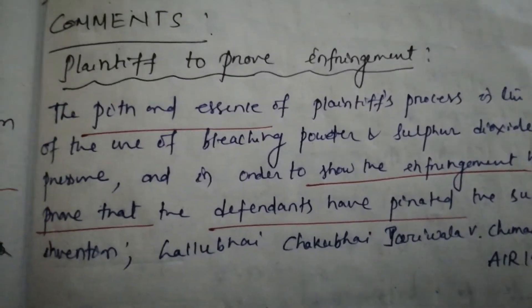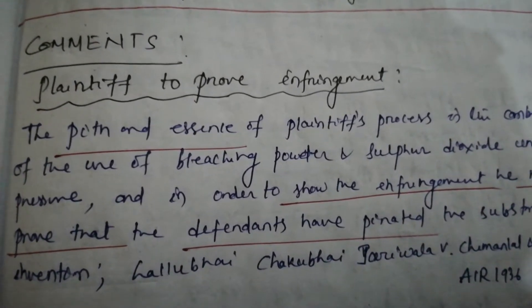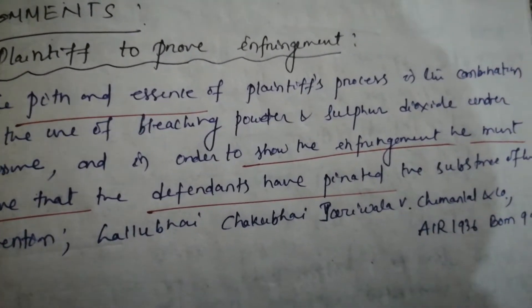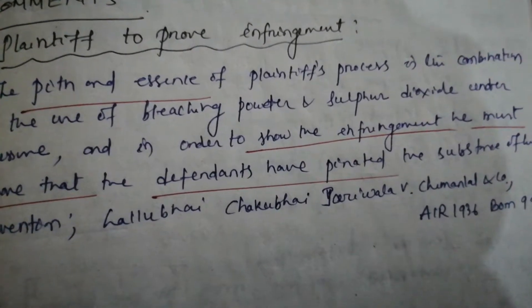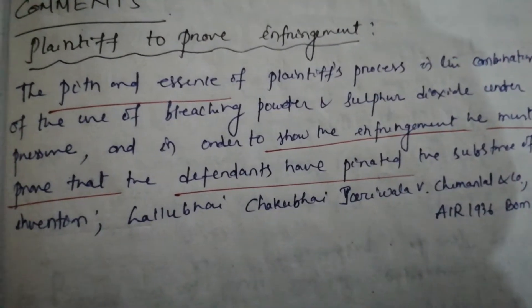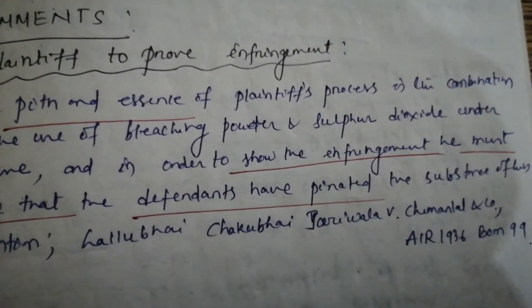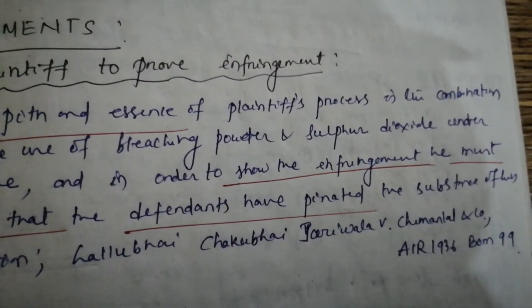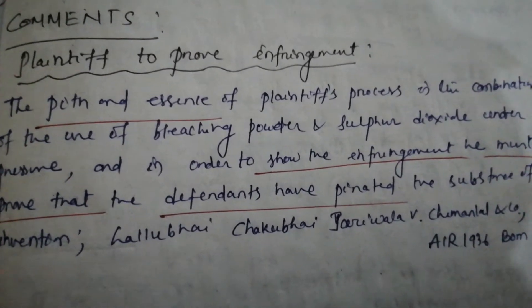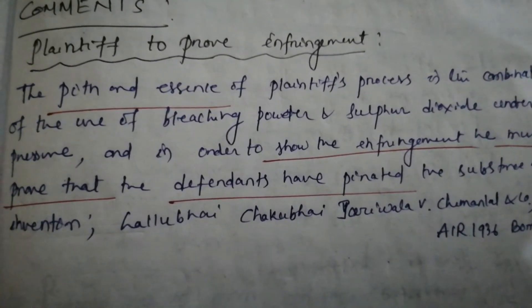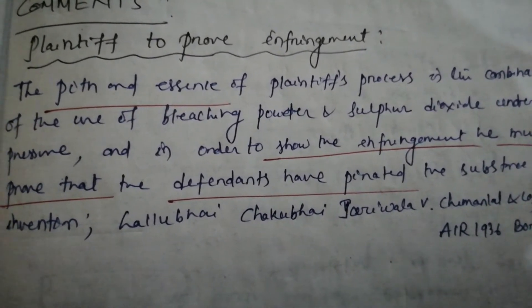This is mentioned in the bare act — you can take a look. The heading is 'Plaintiff to prove infringement.' The pith and essence of plaintiff's process is the combination of the use of bleaching powder and sulfur dioxide under pressure, and in order to show the infringement, he must prove that the defendants have pirated the substances of his invention. Please refer to the case Lalu Bhai Chaku Bhai Jariwala versus Chiman Lanyan Co. You can understand this section and link it to the subsequent section through this case study.